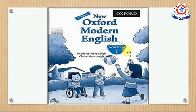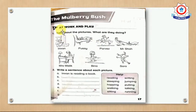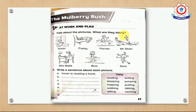This is your new Oxford Modern English workbook. You will open page number 17. Firstly, you will write the date at the top of the page. Secondly, read the instruction: talk about the pictures — what are they doing?